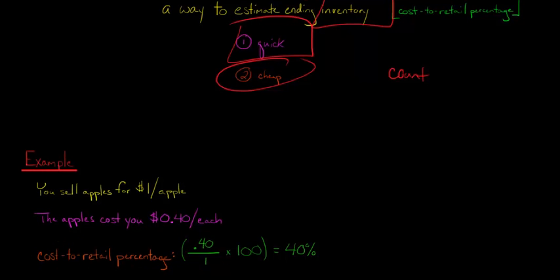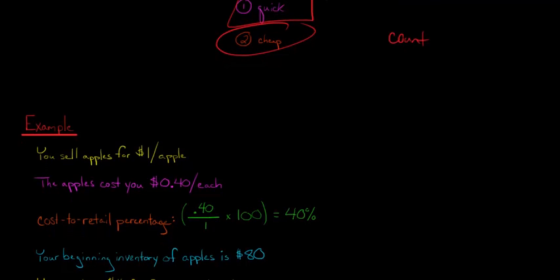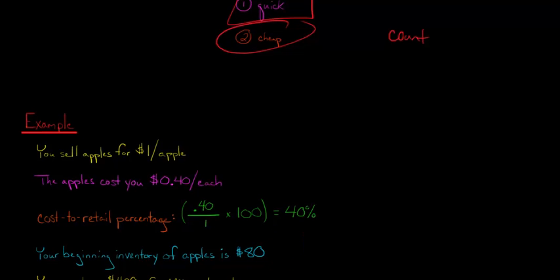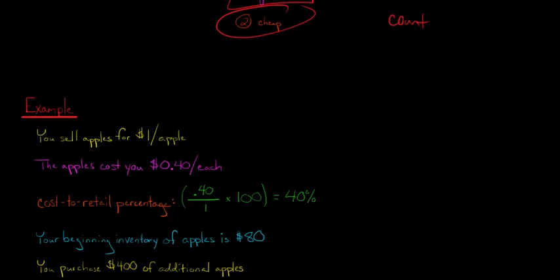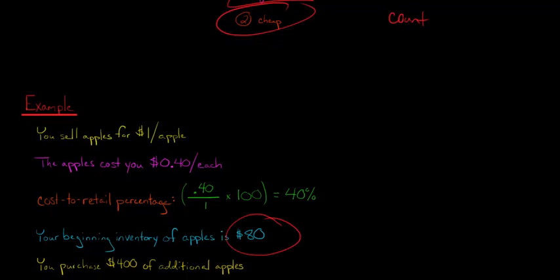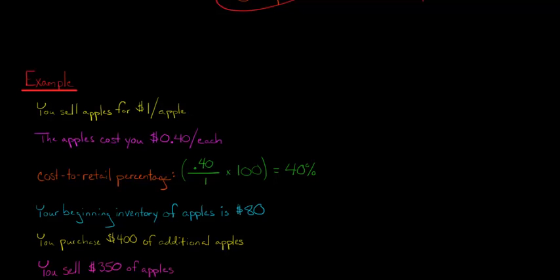Now I'm going to show you how that's used and why that's even relevant. So let's start by recognizing that we start with a beginning inventory of apples. So at the beginning of the day, let's say you have $80 worth of apples in your inventory, but then you also go and you purchase some additional apples. So you start with $80 worth of apples, but you purchase an additional $400 worth of apples. So you started with $80, you bought an extra $400 worth, but then you sell some apples during the day. You sell $350 worth of apples.